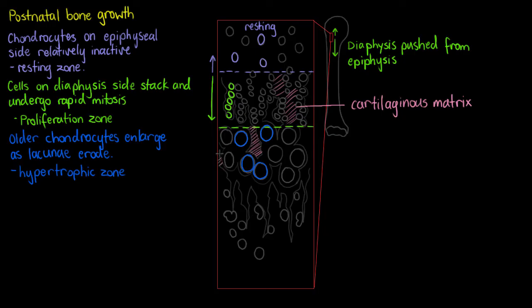And we can also see this cartilaginous matrix here, and the fact that they are so far away from the actual cells now and not being provided with nutrients anymore from those cells, it's going to harden. It's our empty space around the chondrocytes, and it's going to result in that hardened matrix created by the eroding lacunae.